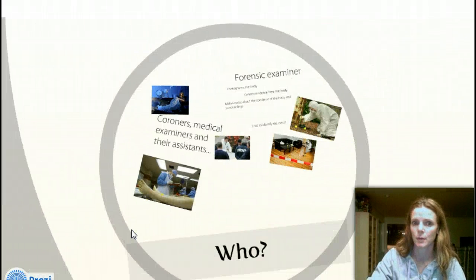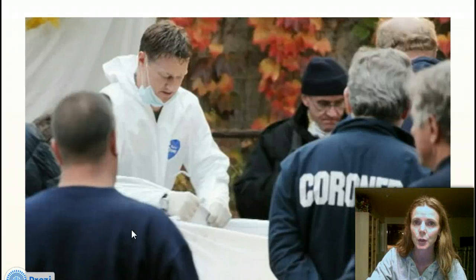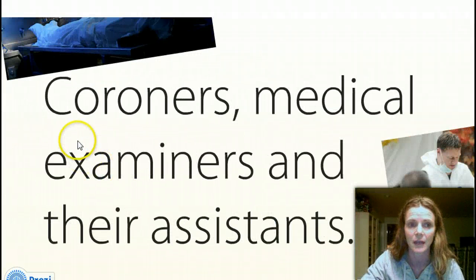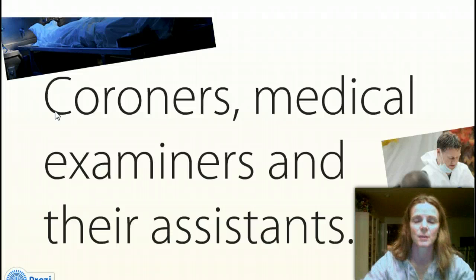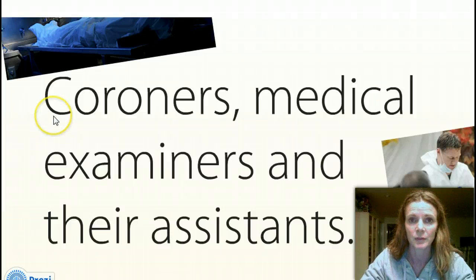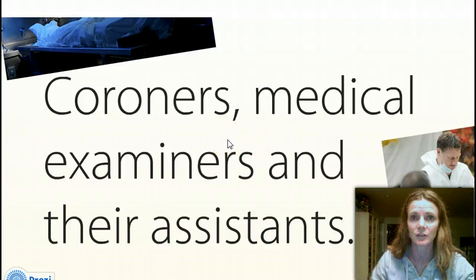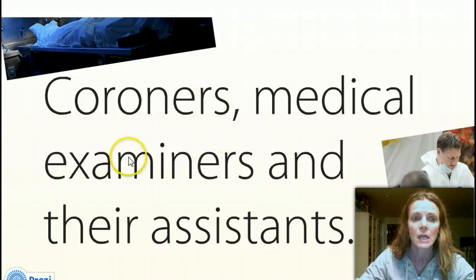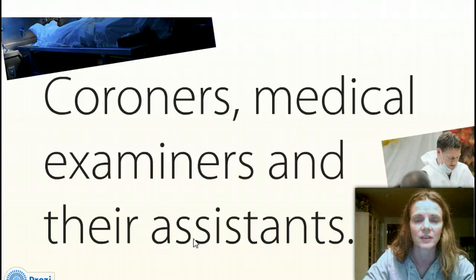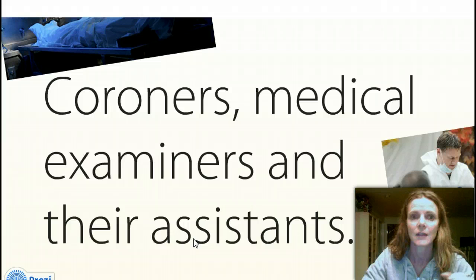Paramedics, police, and fire department can determine that someone is dead, but they cannot declare it — so that doesn't go on a death certificate. The people that declare death are coroners, medical examiners, and their assistants. They have specific training — sometimes a master's or doctorate. Medical examiners can be doctors, and sometimes coroners are medical examiners. Those are the people that actually declare death; they come to the crime scene and then start to figure out the possible whys, hows, and whens.